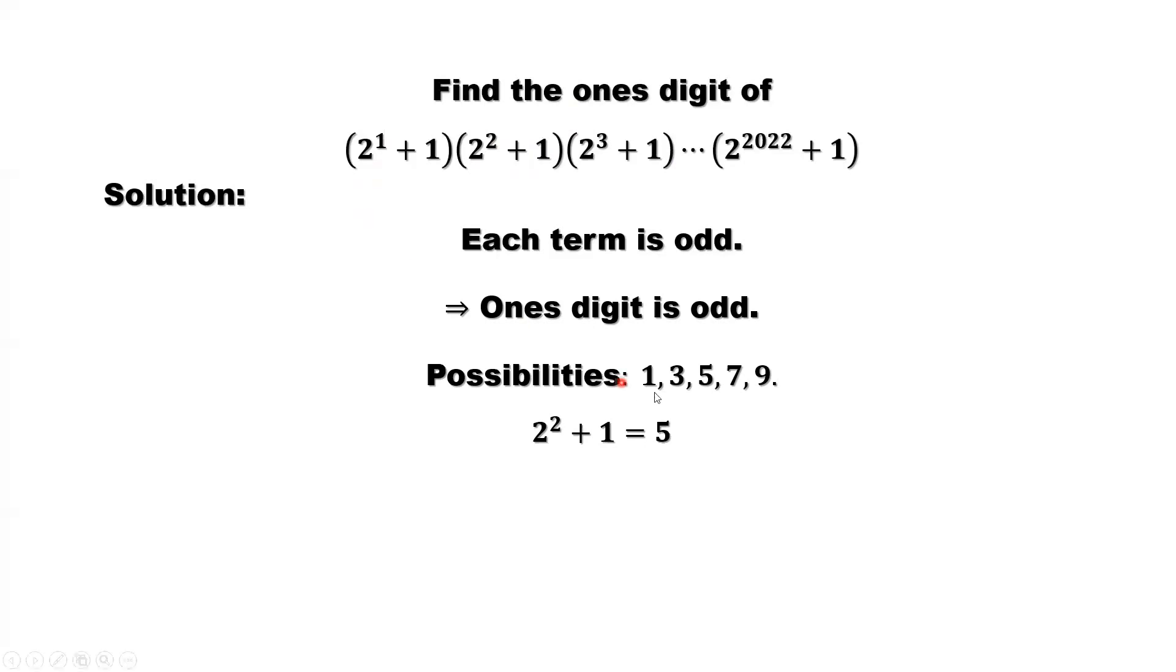From this condition, the one's digit is an odd number. So only 5 is possible.